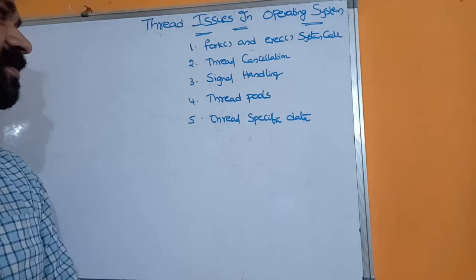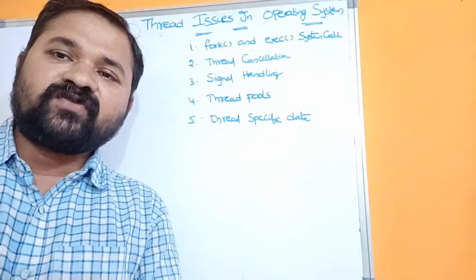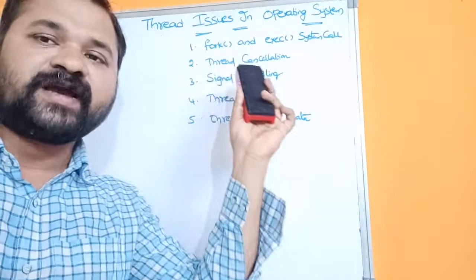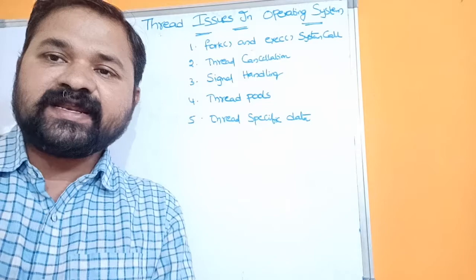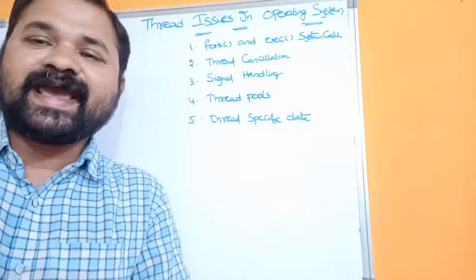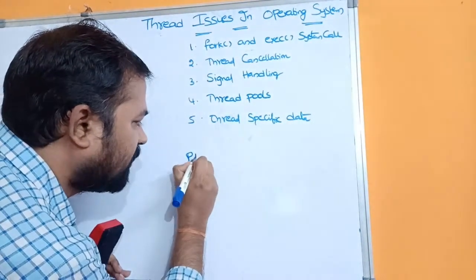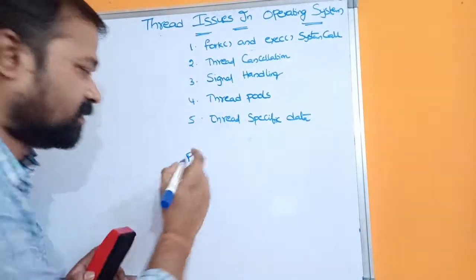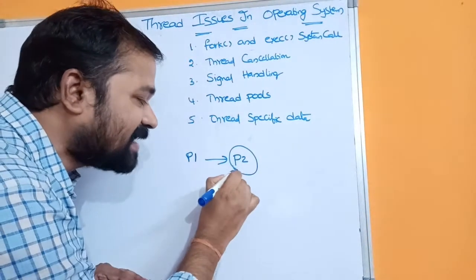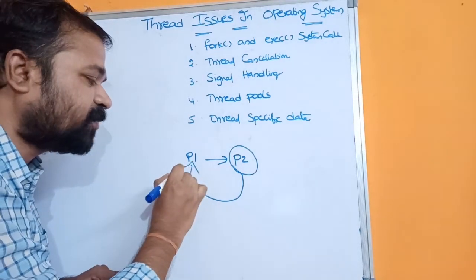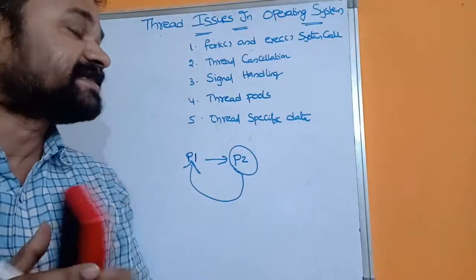Let's discuss all these issues one by one. First, fork and exec system calls. Generally, fork and exec system calls are used by a process. If a process calls fork system call, then a new process will be created which will be an exact duplicate copy of its parent process. For example, if process P1 calls fork, then process P2 is created as an exact duplicate copy of P1.